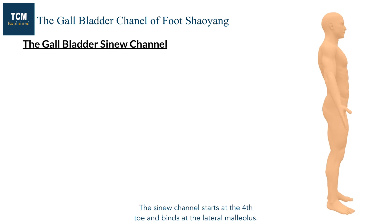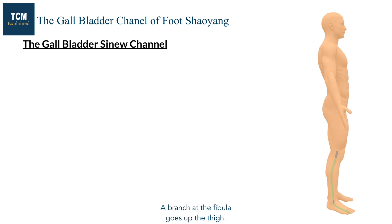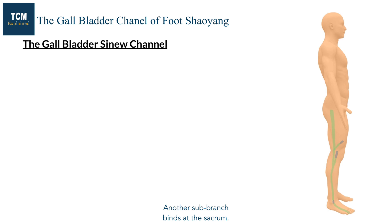The sinew channel starts at the fourth toe and binds at the lateral malleolus. It goes up and binds at the lateral side of the knee. A branch at the fibula goes up the thigh. A sub-branch binds in the region above Stomach 32, and another sub-branch binds at the sacrum.